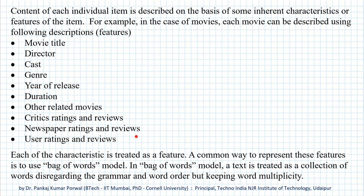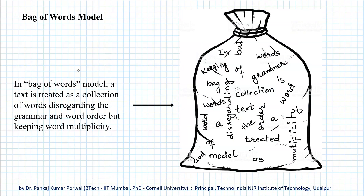Each of these characteristics is treated as a feature, and a common way to represent these features is to use a bag of words model. A bag of words model is a model where we literally dump our text — that can be a phrase, a sentence, or a paragraph — into a bag where only words remain intact, but we lose word order and grammar. We only know what the words are and how many times they occur in our text. Note that this is different from a set, where we lose both word order and multiplicity, whereas in the bag of words model, we only lose the word order.